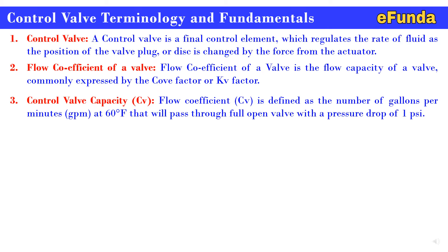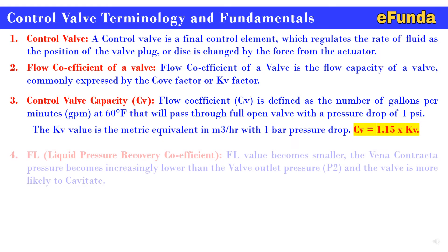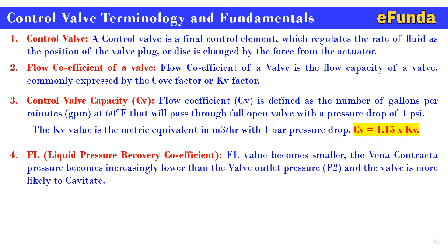Third: control valve capacity — the Cv flow coefficient. Cv is defined as the number of gallons per minute (GPM) at 60°F that will pass through a full-open valve with a pressure drop of one PSIG. The Kv value is the metric equivalent in cubic meters per hour with a 1 bar pressure drop. Cv equals 1.15 multiplied by the Kv factor.